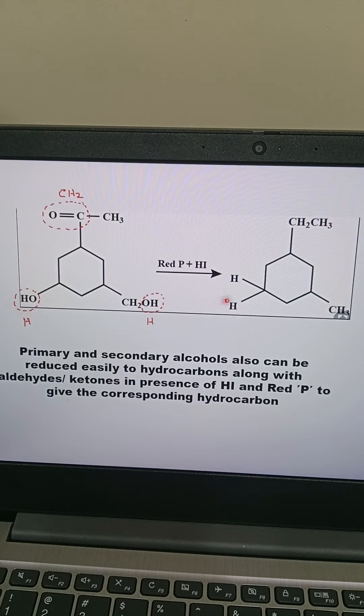This OH is reduced to hydrogen. So here you can see this carbon is now connected with two hydrogens. One hydrogen is already present with this carbon. Now CH2OH, this OH converts to H. So we are getting methyl.